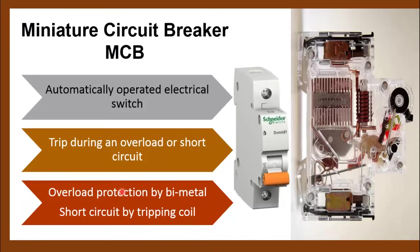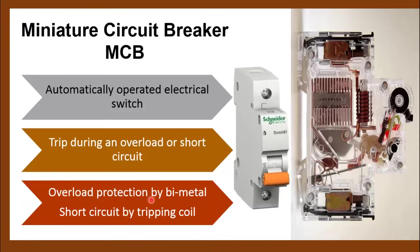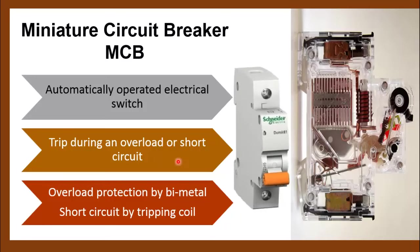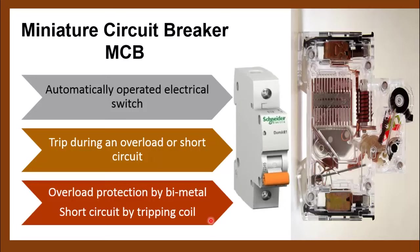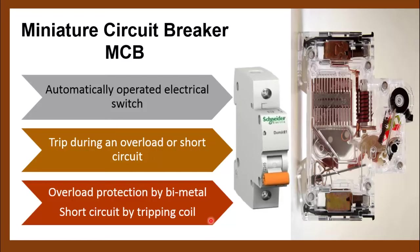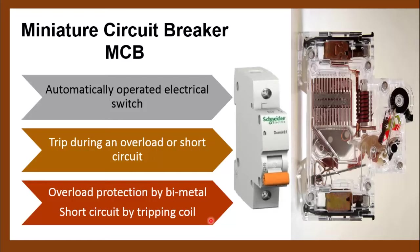The circuit breaker has both protections: overload protection, done with the help of a bimetallic strip, and short circuit protection, done through a tripping coil. So the circuit breaker has both thermal and magnetic protection. Since it is a very critical device in the electrical power system, the selection of the circuit breaker is also a very critical decision.